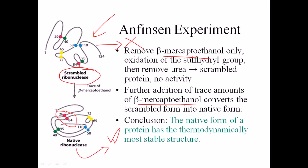If the disulfide bridge forms between residues 26 and 40 instead of 26 and 84, the structure is no longer active. It's not just about making bonds — it's about specific bonding. The bonding must be specified to make the native state. That's why the native state is truly one in a million — only one specific combination of amino acid interactions out of the many possible combinations is favored, and that is the native combination.